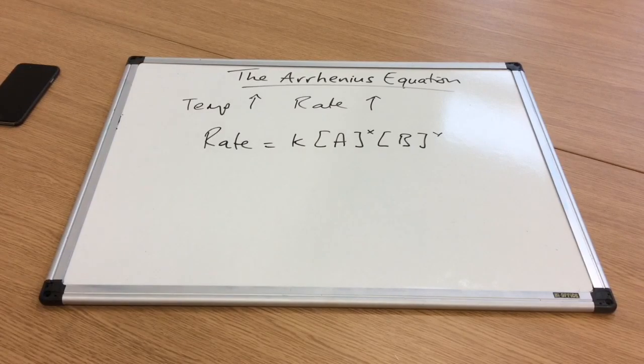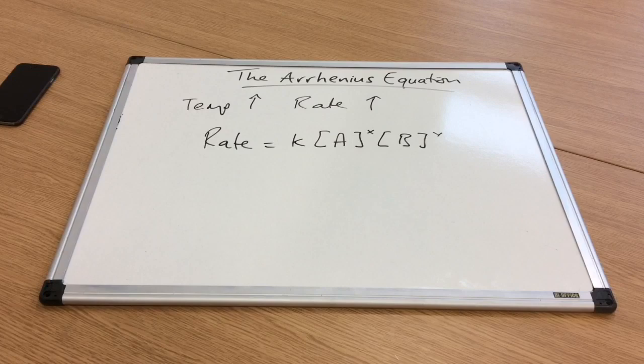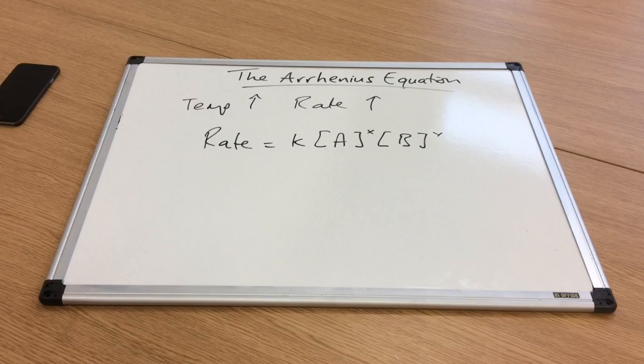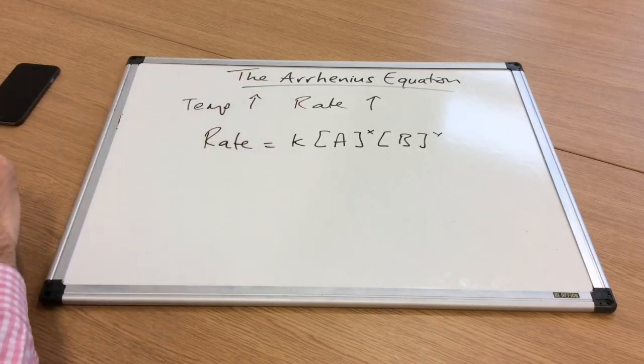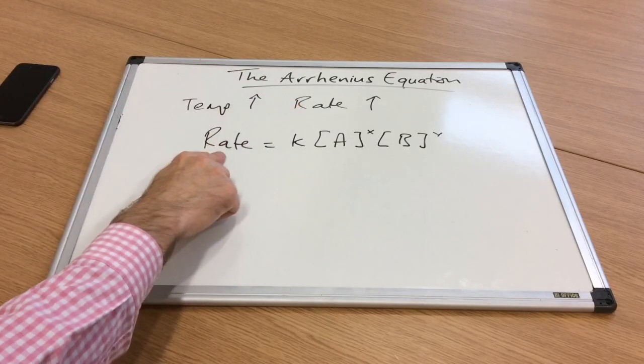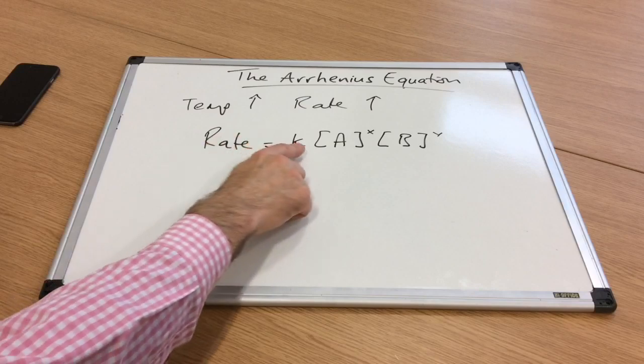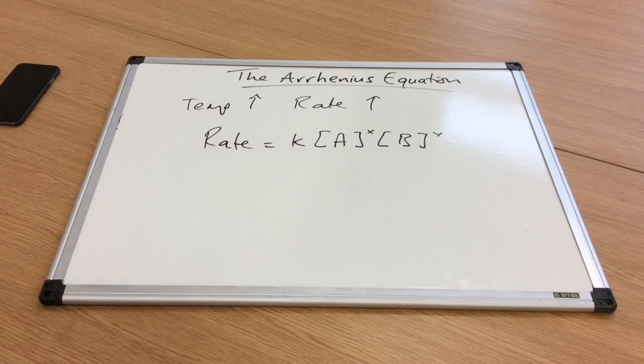If we take it to the next level, we've got this rate equation. This is just a generic rate equation on the board. If we change the temperature, the concentrations don't change. So if the temperature increases, the rate increases, which means K must be increasing as well.